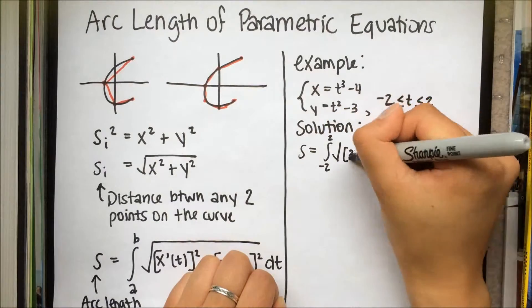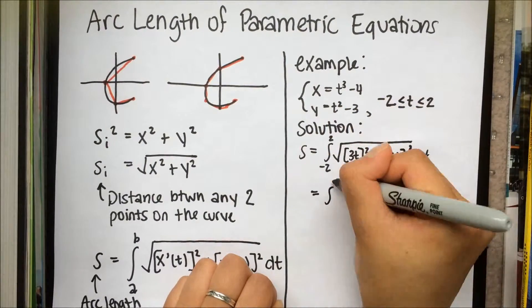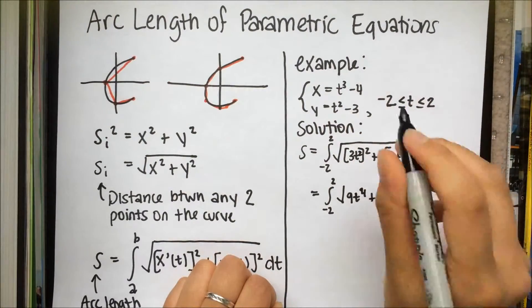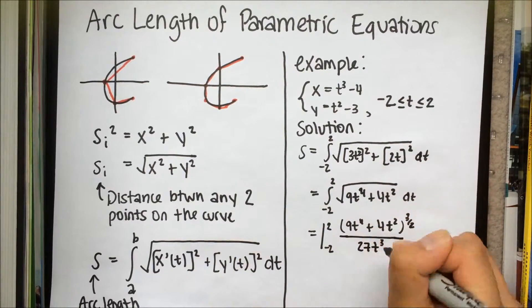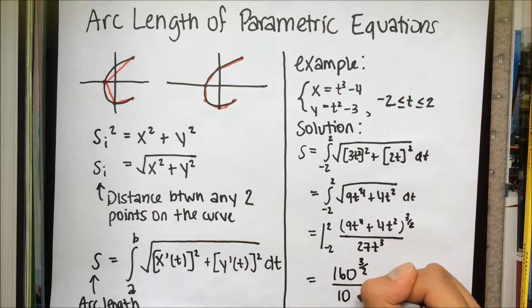Using the given equation, we calculate the derivative of x and y and continue to find the integral. Finally, we get the value of 160 to the power of 3 over 2 over 108 for the value of s.